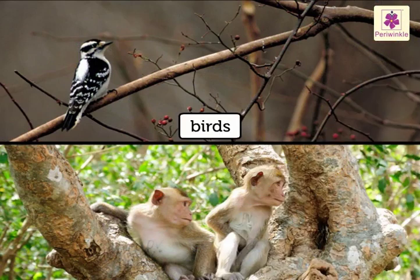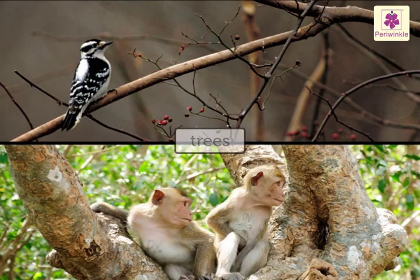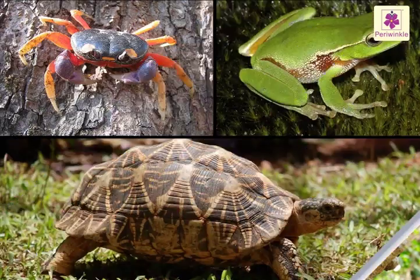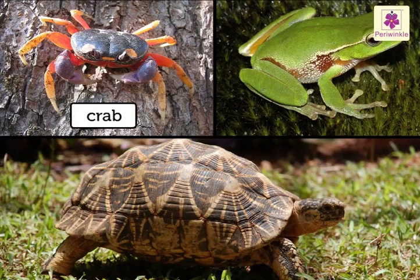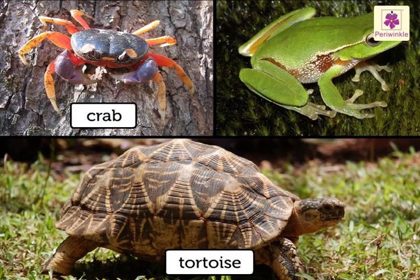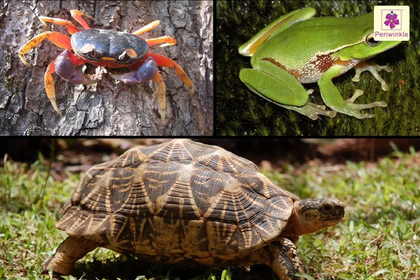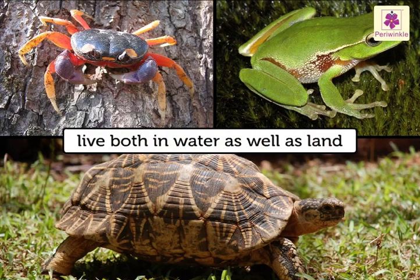Birds and monkeys live on trees. Some animals like crab, tortoise, and frog live both in water and on land.